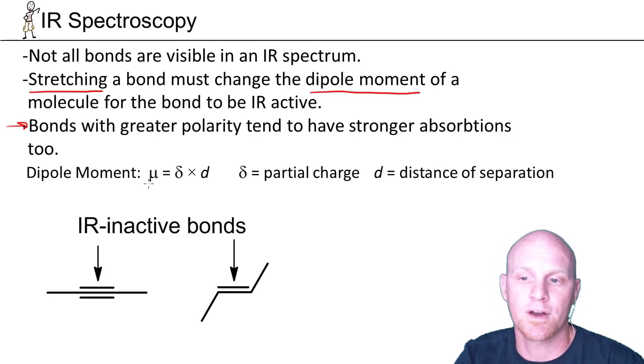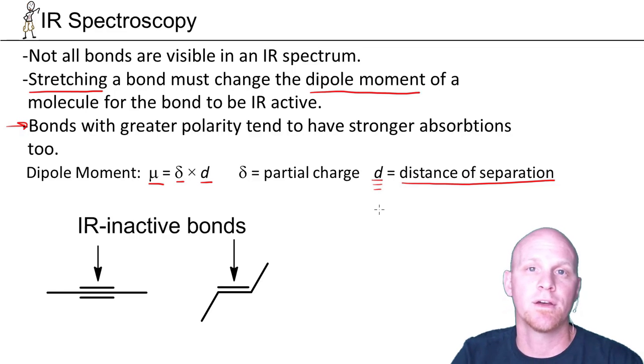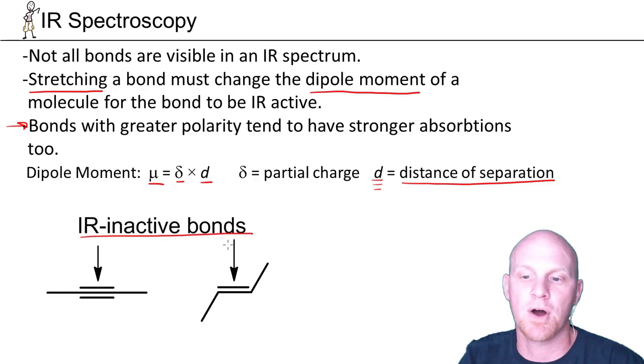If you remember dipole moment, μ is equal to δ times d. δ is the partial charge of separation between or across the molecule. And d is that distance of separation. It's d that we're really going to affect when we stretch a bond. If we stretch a bond, we're going to increase that d value, which typically would change the dipole moment. There are a couple of prime examples of what we call IR inactive bonds.